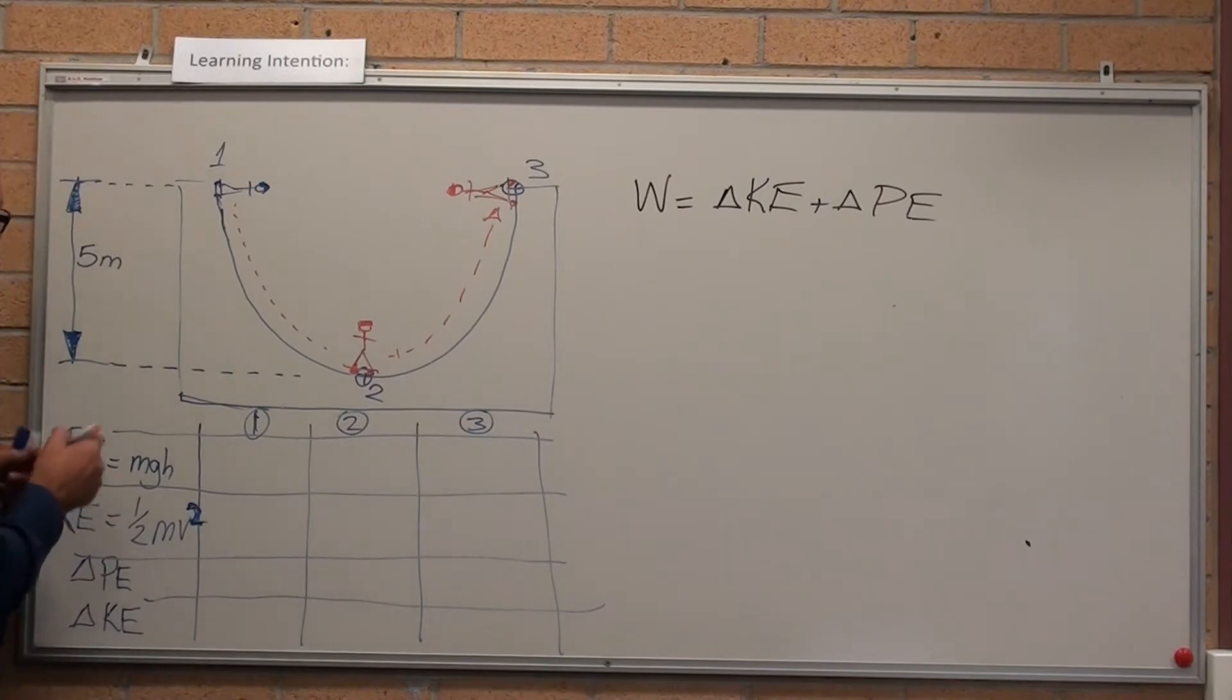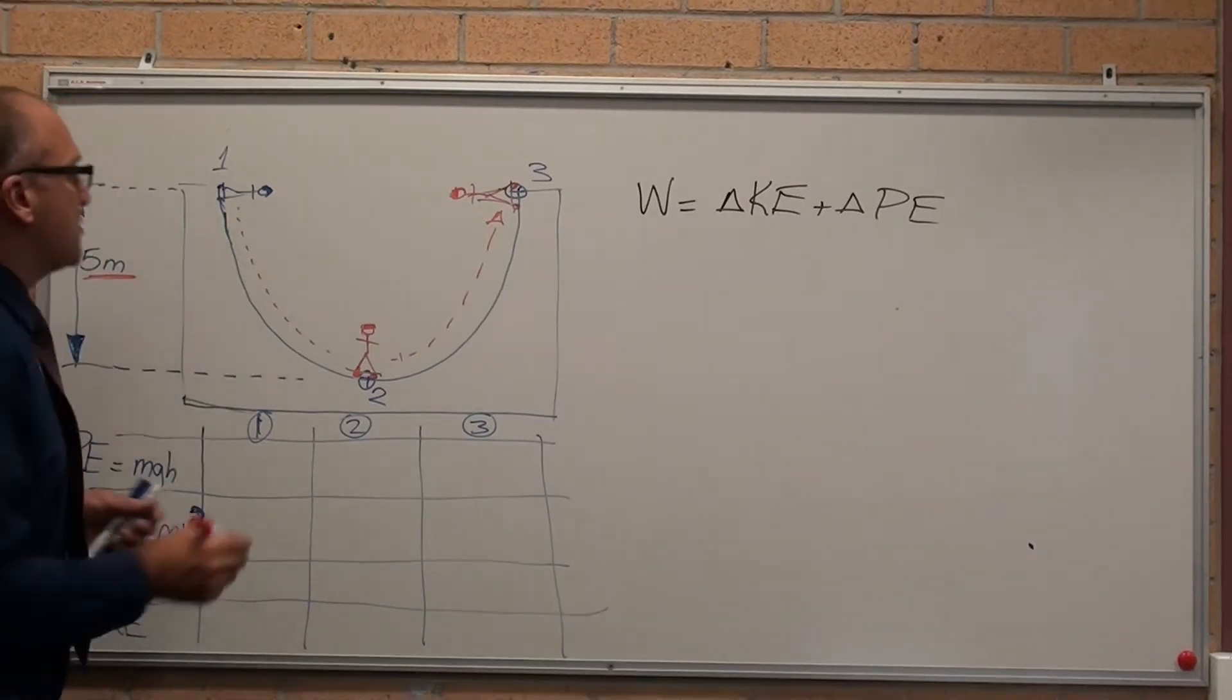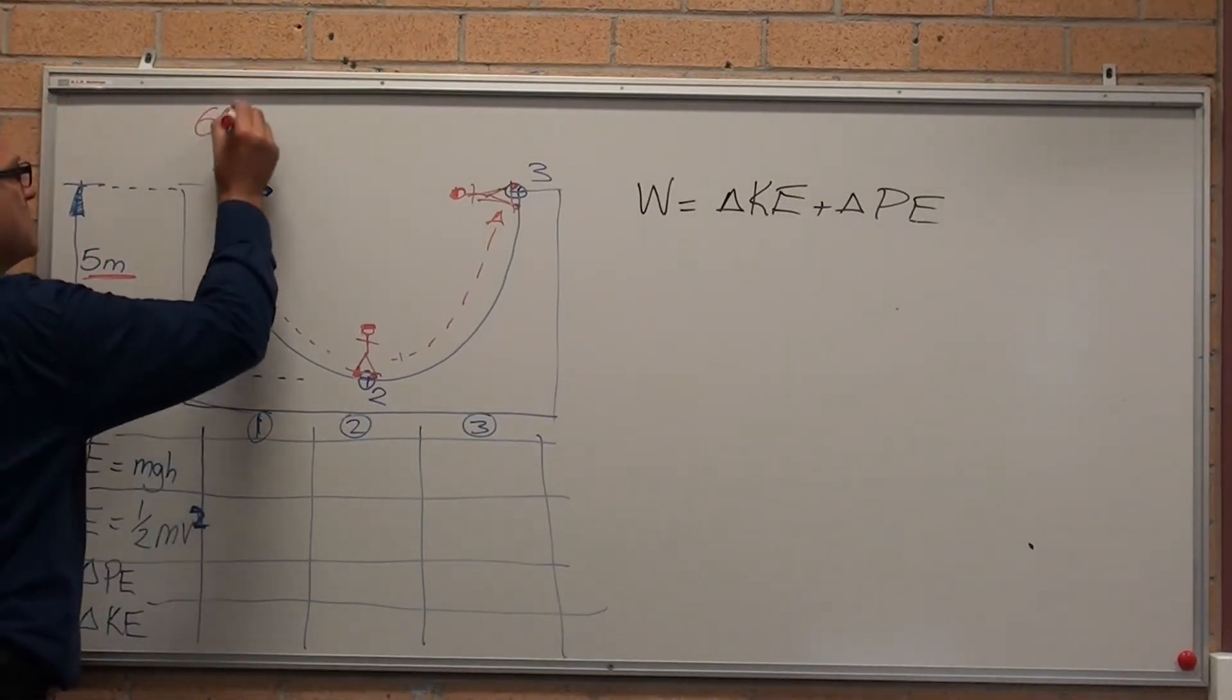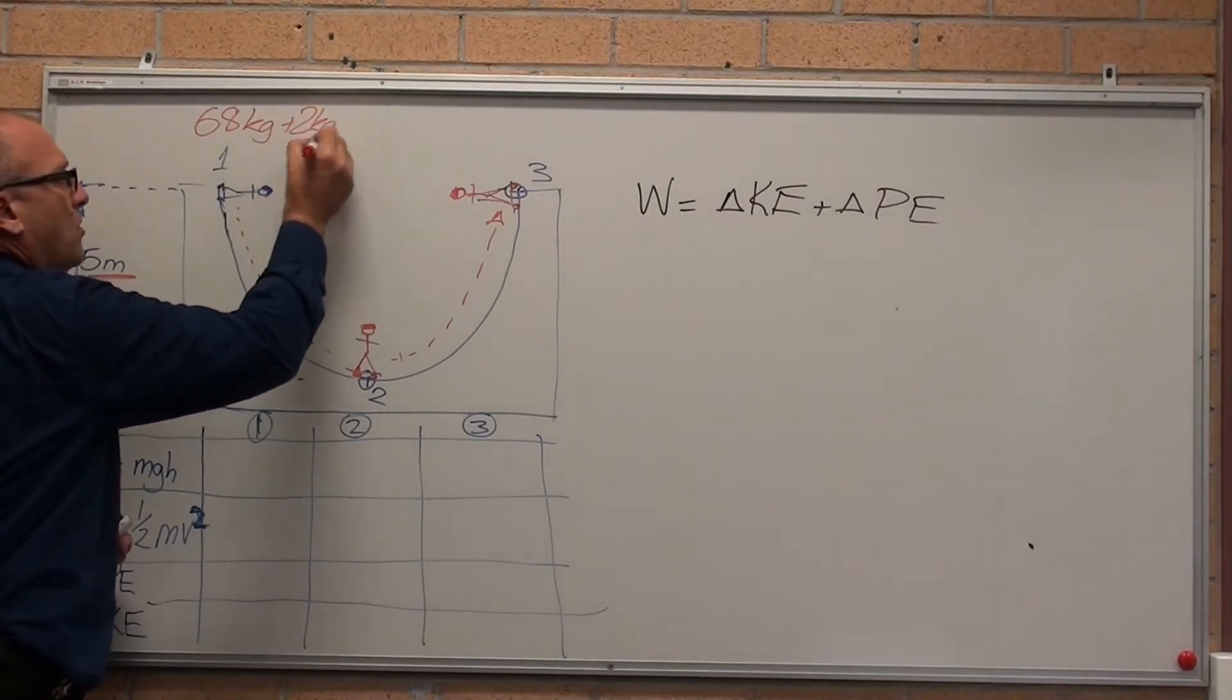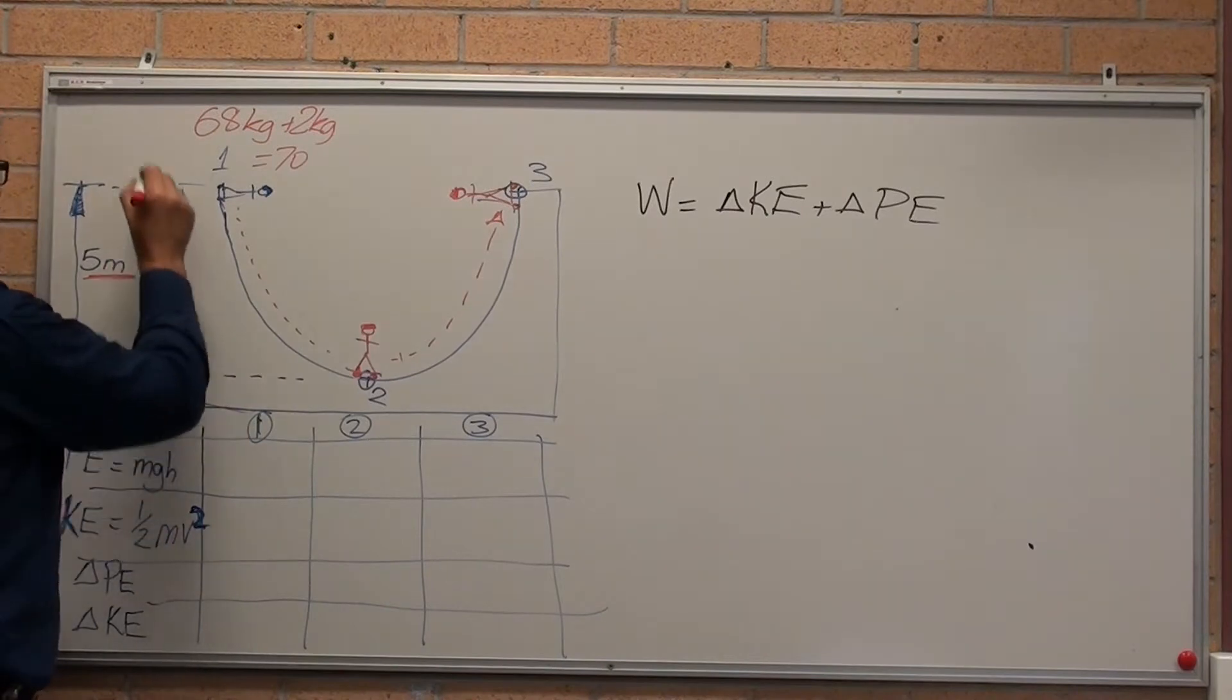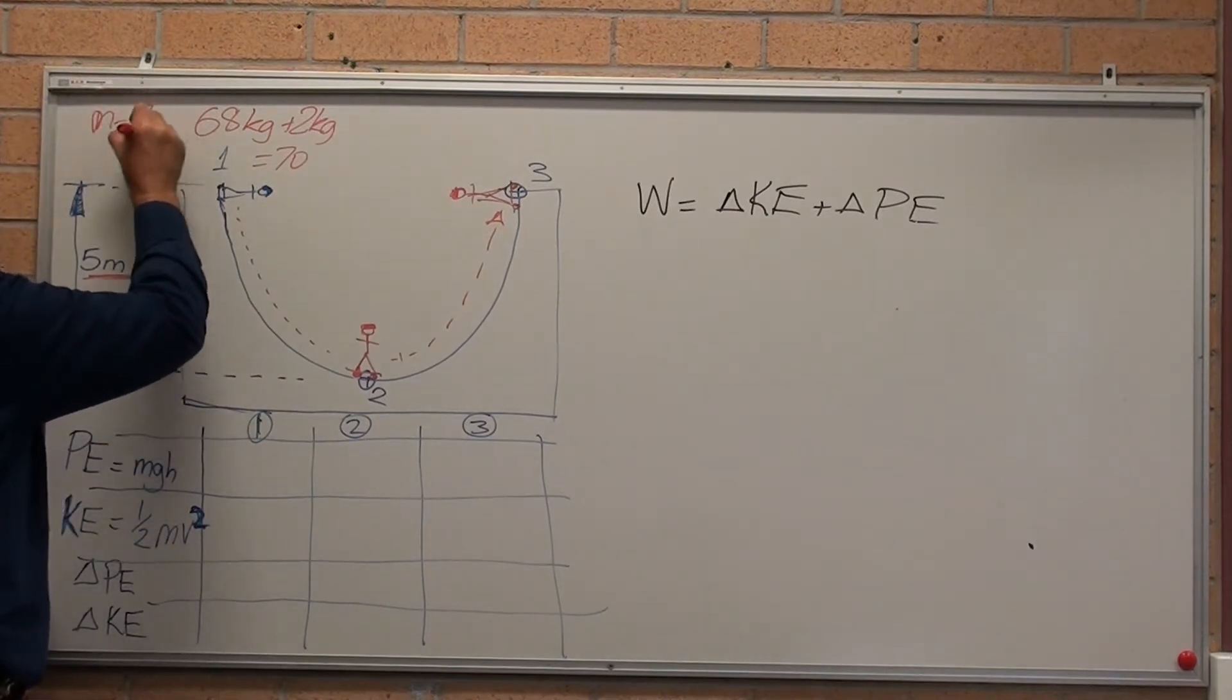Up the top, position one, his potential energy is five meters up. Let's assume that his mass is 68 kilograms. 68 kilograms plus 2 kilograms for the board is 70. So he's M equals 70.